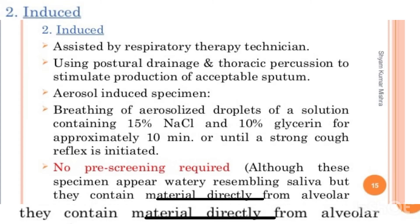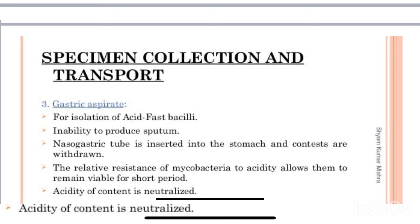For specimen collection and transport, gastric aspirate is used for isolation of acid-fast bacilli when the patient is unable to produce sputum. A nasogastric tube is inserted into the stomach and the contents are withdrawn as the sample. The relative resistance of Mycobacterium to acidity allows them to remain viable for a short duration, and the acidity of the contents is neutralized accordingly.